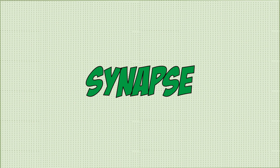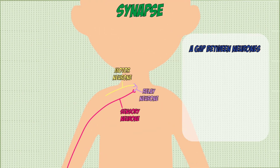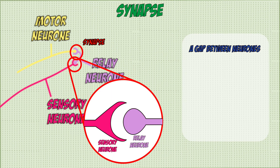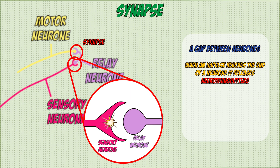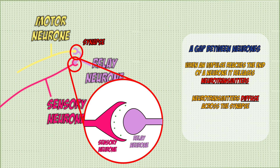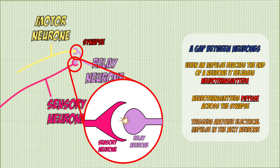A synapse is a gap between different neurons. Just like electrical current in a circuit, electrical impulses can't flow through gaps. So when an impulse reaches the end of a neuron, it triggers chemicals known as neurotransmitters to diffuse across the gap to the next neuron. Once they reach the other side, they trigger another electrical impulse to allow it to continue down the path and carry on sending the message.